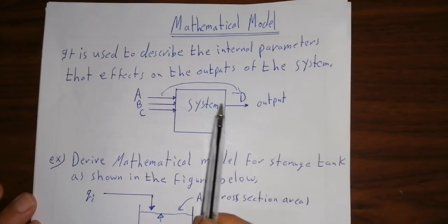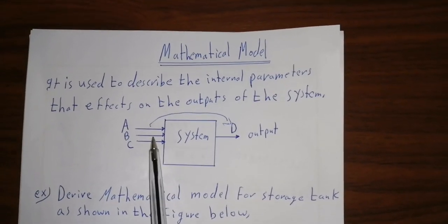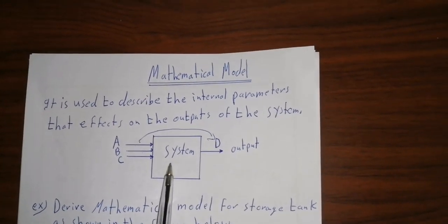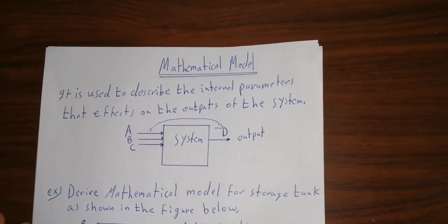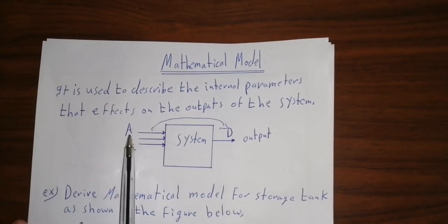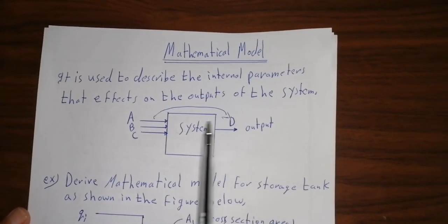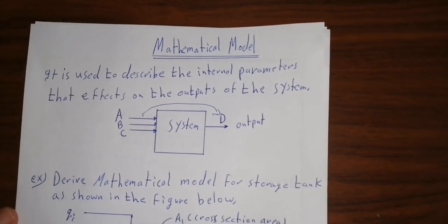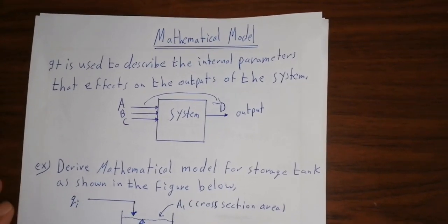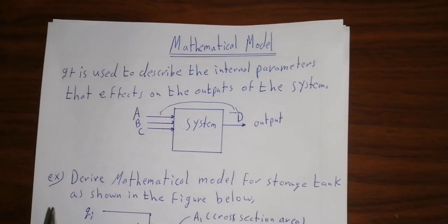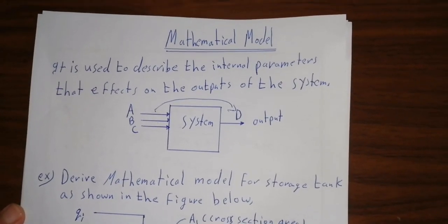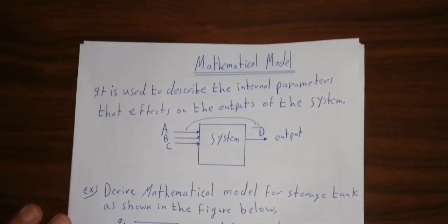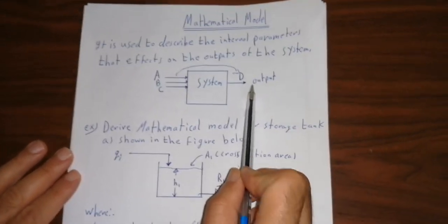This effect cannot occur without entering the system, which means the system is the mathematical model. The mathematical model describes how much each input affects the output. From this, we can make predictions about the output and use it in a control system. In this case, the model is defined by the internal parameters that affect the output.